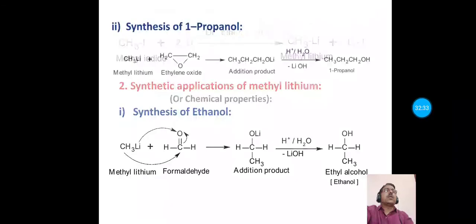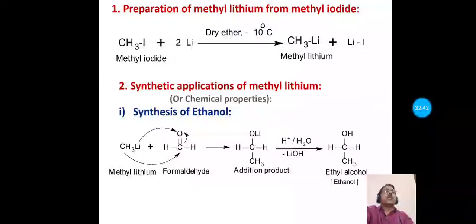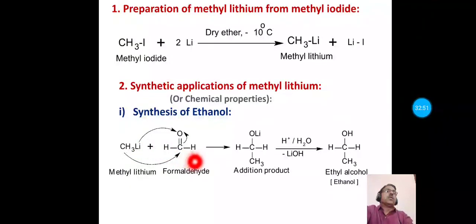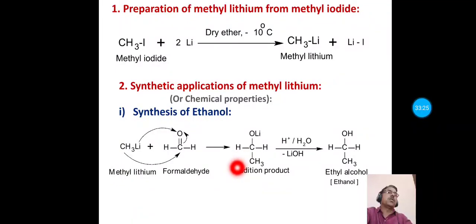The first synthetic application of methyl lithium is synthesis of ethanol. Methyl lithium is treated with formaldehyde, giving an addition product, which upon hydrolysis forms ethanol. In this reaction, lithium attaches to the negatively charged oxygen of formaldehyde after the pi electrons of the carbonyl shift toward oxygen, and the methyl group attaches to the electron-deficient carbon. Acid hydrolysis of the intermediate releases lithium hydroxide as a byproduct and gives ethyl alcohol as the main product.